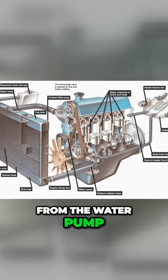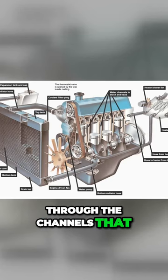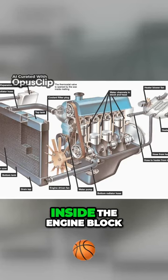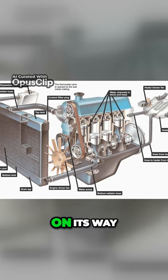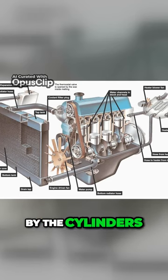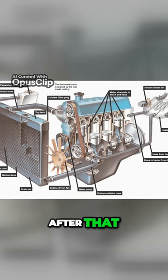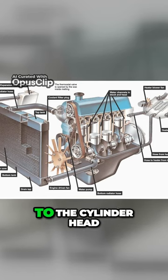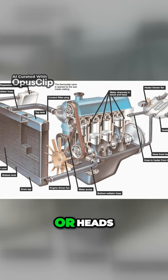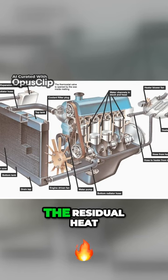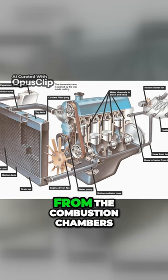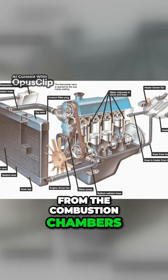The coolant flows from the water pump through the channels that are located inside the engine block. On its way, it gathers the heat produced by the cylinders. After that, it goes up to the cylinder head or heads in a V-type engine, where it collects the residual heat from the combustion chambers.